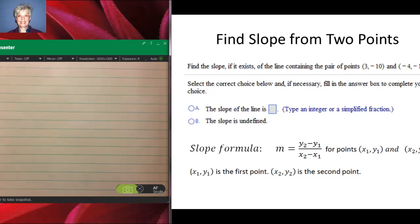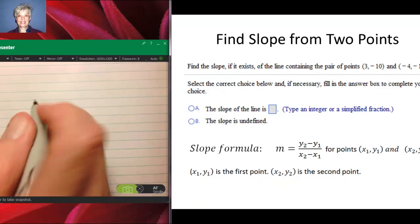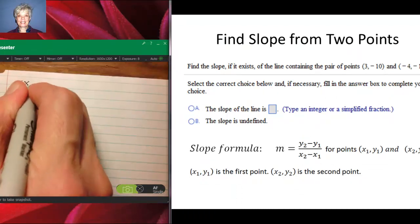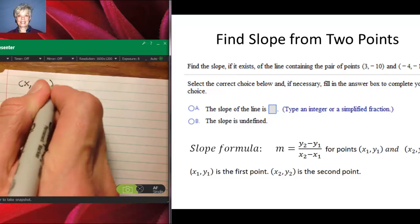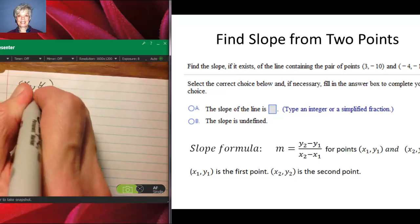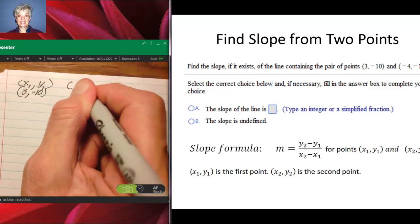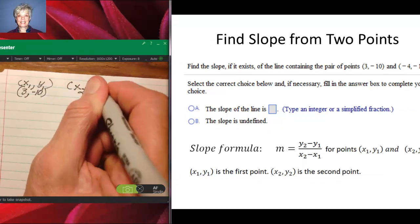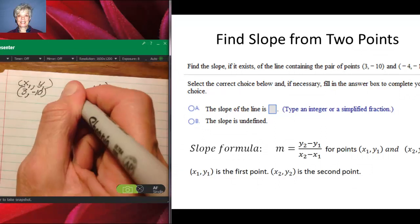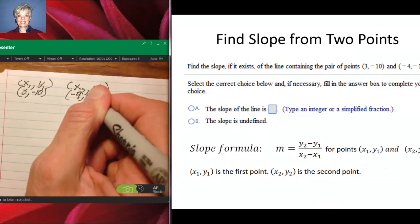Okay, now we have two sets of points again. We have x1, y1 which is (3, -10), and x2, y2 which is (-4, -10).